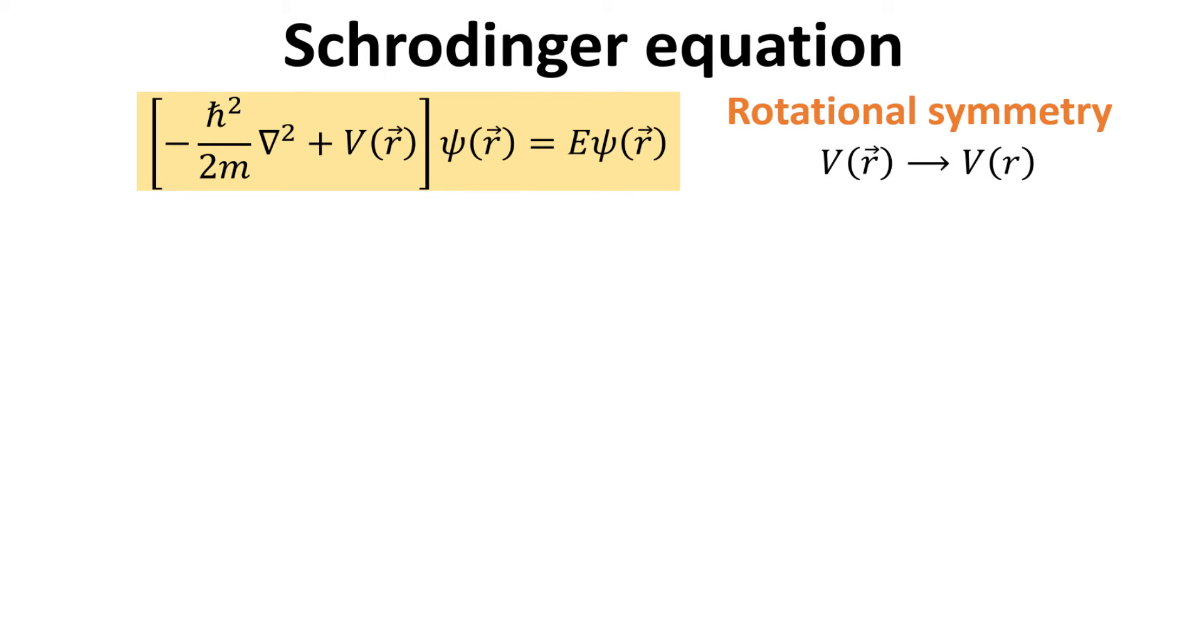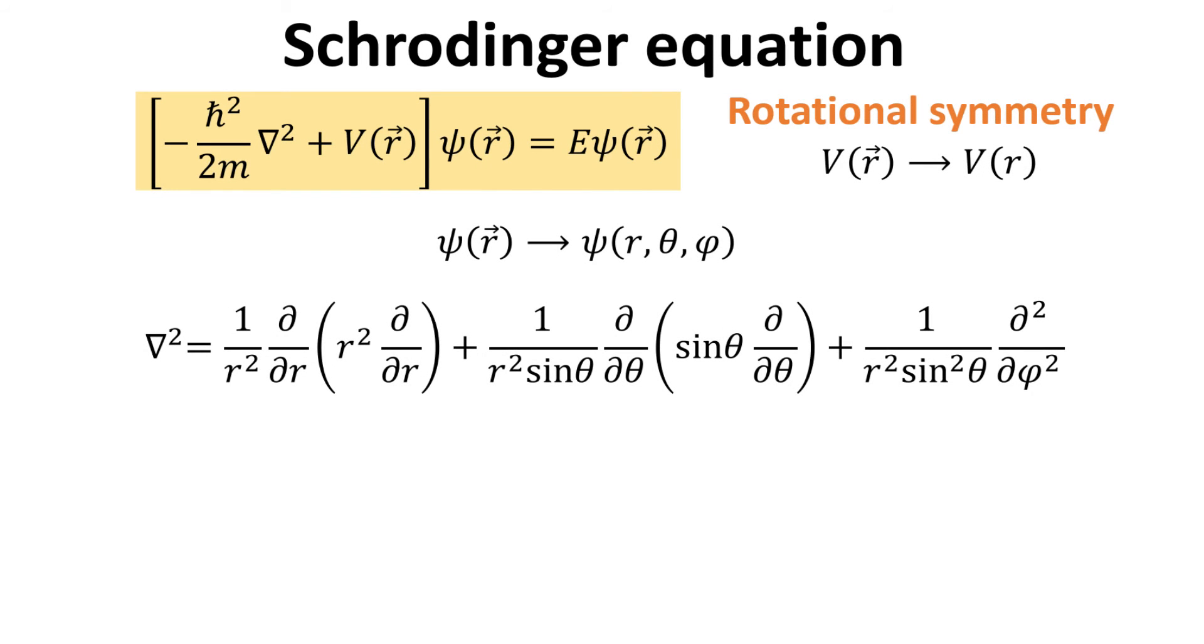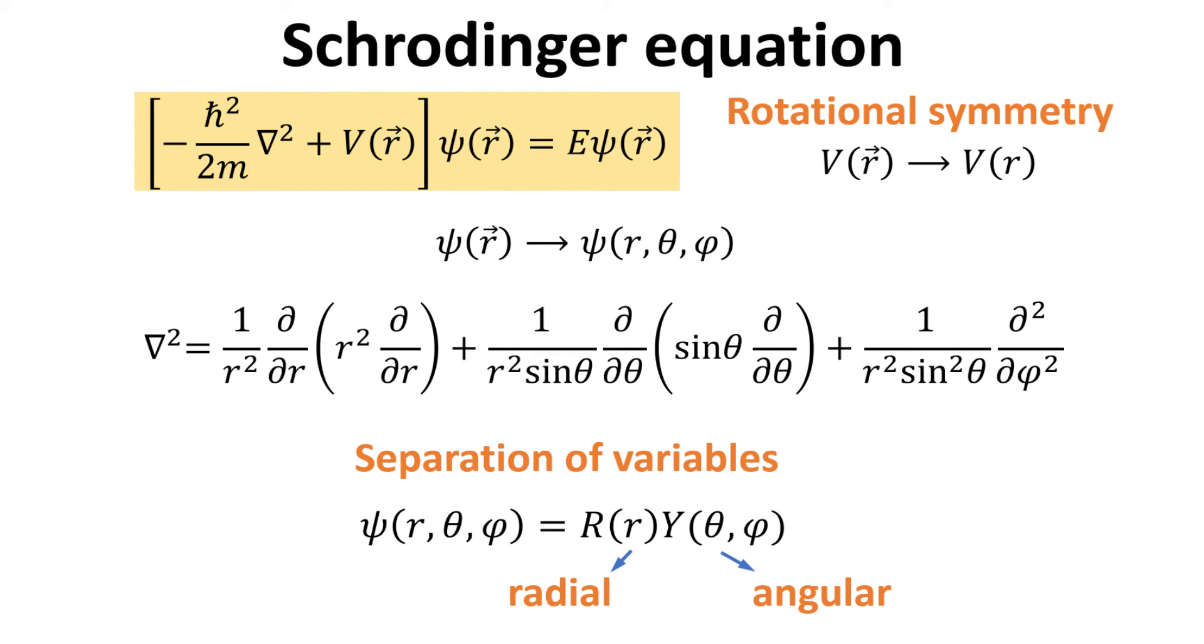Okay, back to the Schrödinger equation. We are interested with central potential V, for which V is a function only of the distance from the origin, given by the radial coordinate R. We can express our wave function as function of the spherical coordinates, and the Laplacian in the Schrödinger equation is as shown. We shall begin with looking for solution that are separable into products of functions R and Y, where R is only a function of R, and Y is only a function of theta and phi.